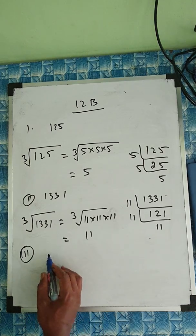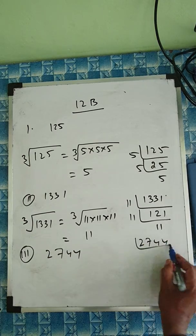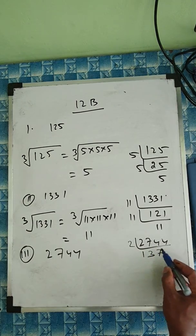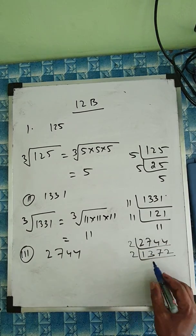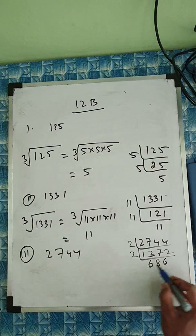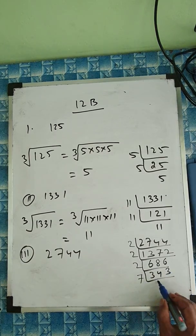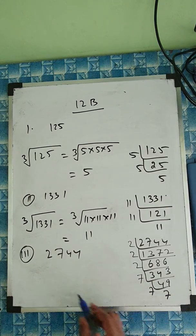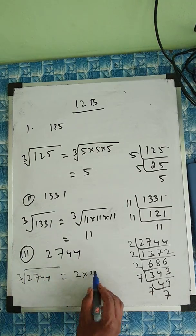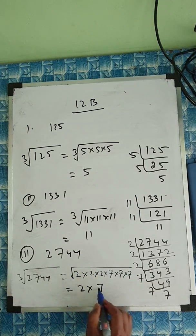Question number 3: 2744. We divide by 2 repeatedly — 2 goes into 2744, then we keep dividing. Eventually we also divide by 7 twice. So the prime factorization gives us 2 × 2 × 2 × 7 × 7 × 7.